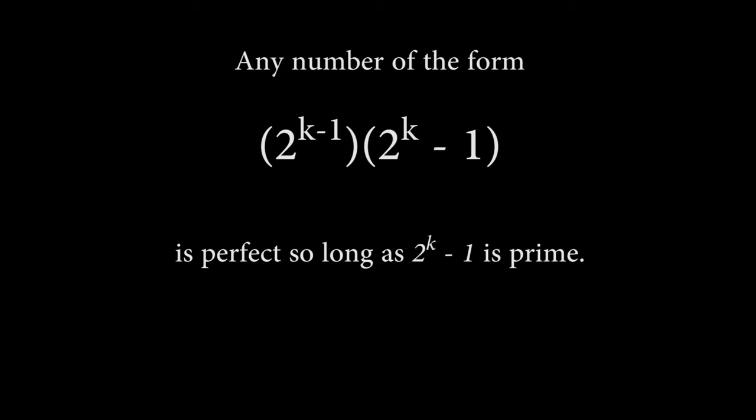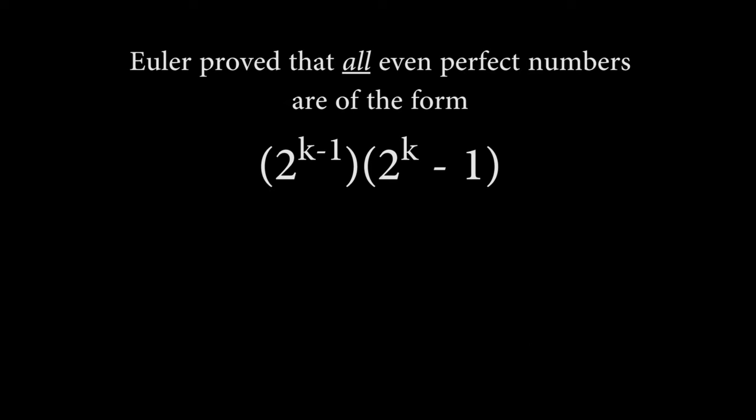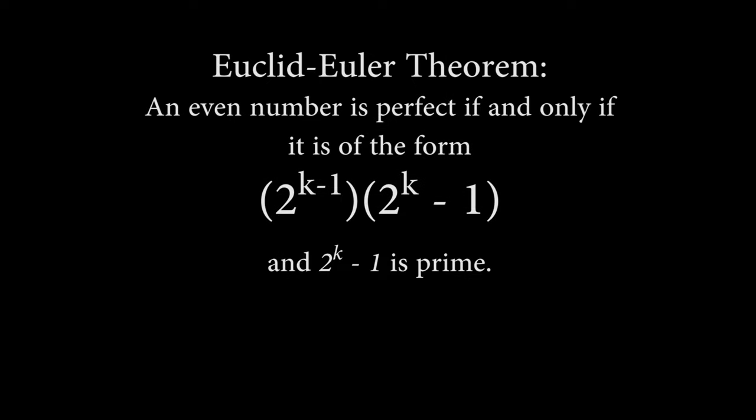By the way, prime numbers that are 1 less than a power of 2 like this are called Mersenne primes. In the 1700s, Leonard Euler proved that all even perfect numbers will be of this form. Together, these proofs make up the Euclid-Euler theorem.